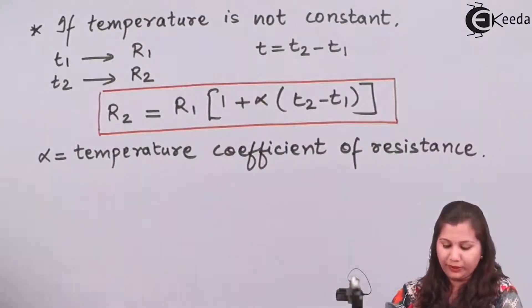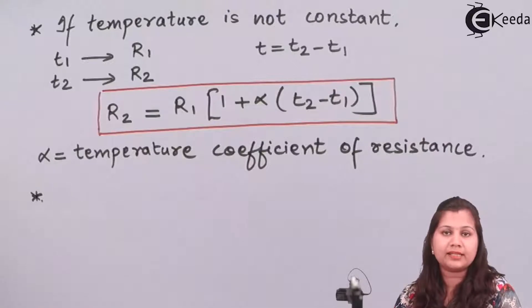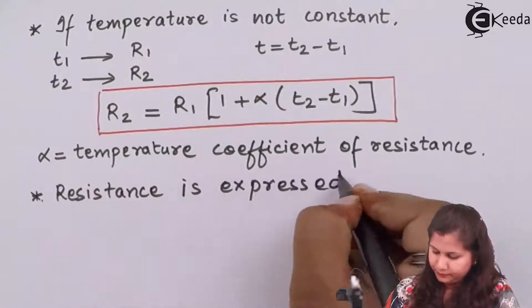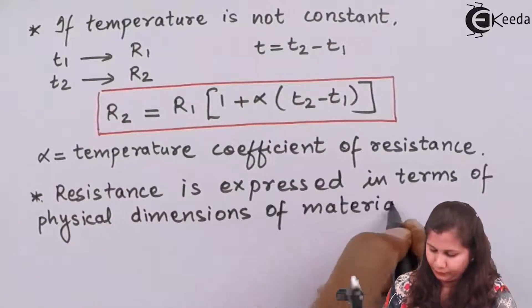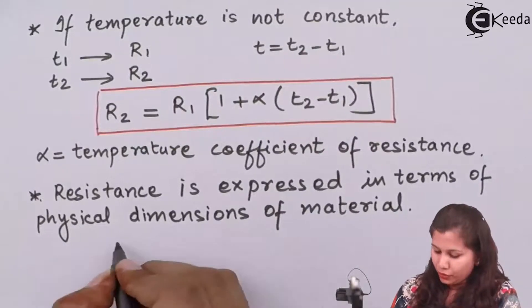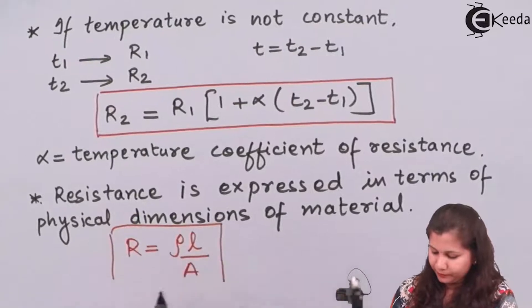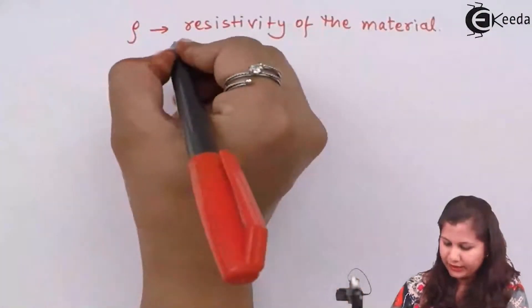There is another formula through which we can calculate resistance, expressing it in terms of the physical dimensions of the material. The formula is R equals rho times L divided by A, where rho is the resistivity of the material — also called specific resistance — L is the length of the material, and A is the cross-sectional area of that material.